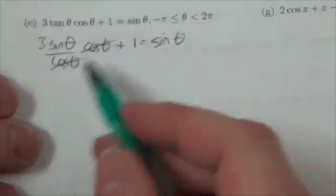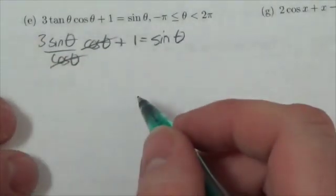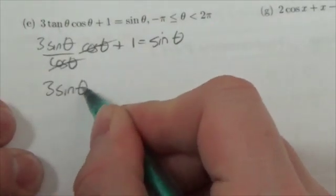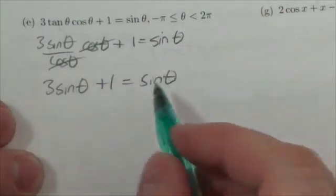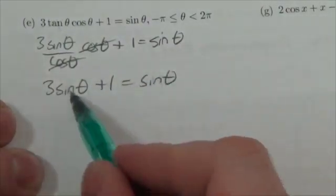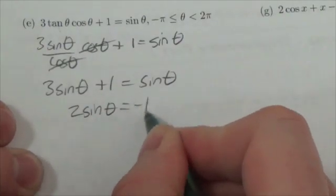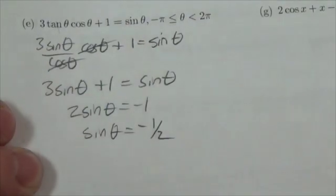Cos over cos is one. Now that's so long as cosine doesn't equal zero. But we'll double check our result here at the end. So this gives us three sine theta plus one equals the sine of theta. And I'm going to bring this sine theta over to the left hand side and maybe push the one over. So that'll leave me with two sine theta equals negative one. Or the sine of theta is equal to negative one half.